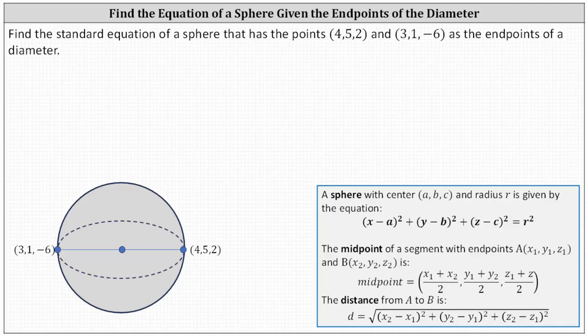Find the standard equation of a sphere that has the points (4, 5, 2) and (3, 1, -6) as the endpoints of a diameter, as shown below.